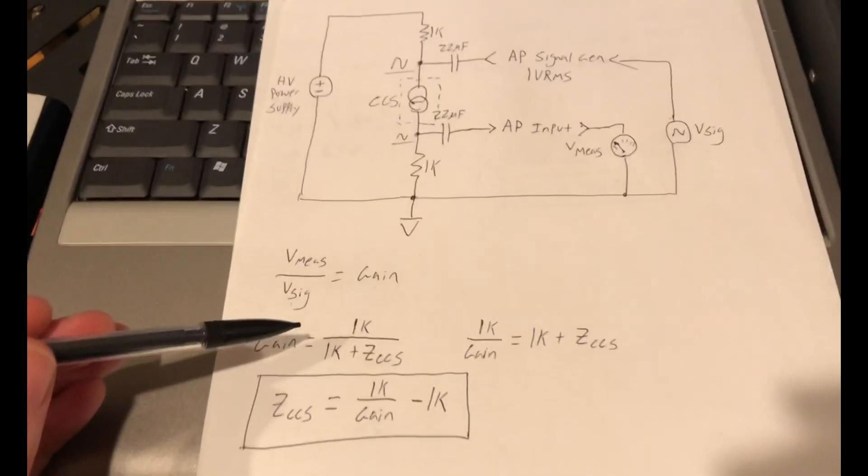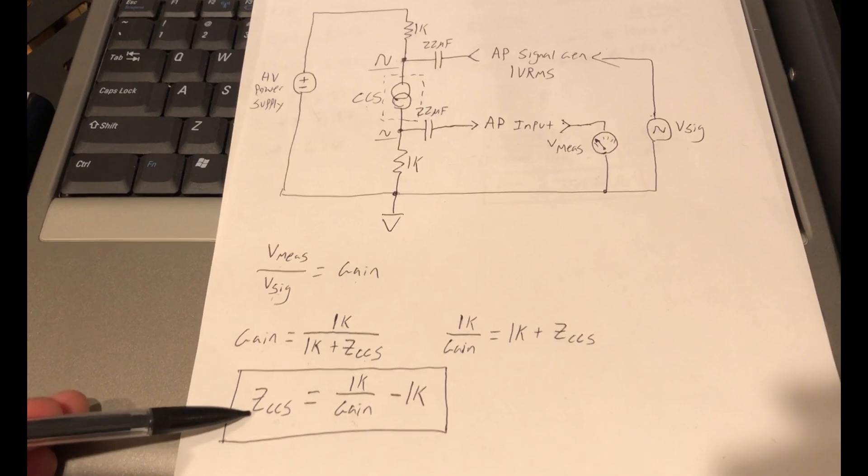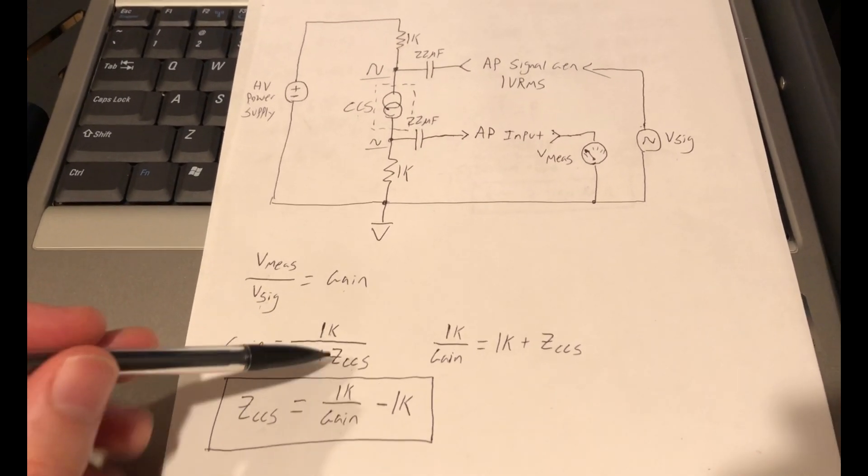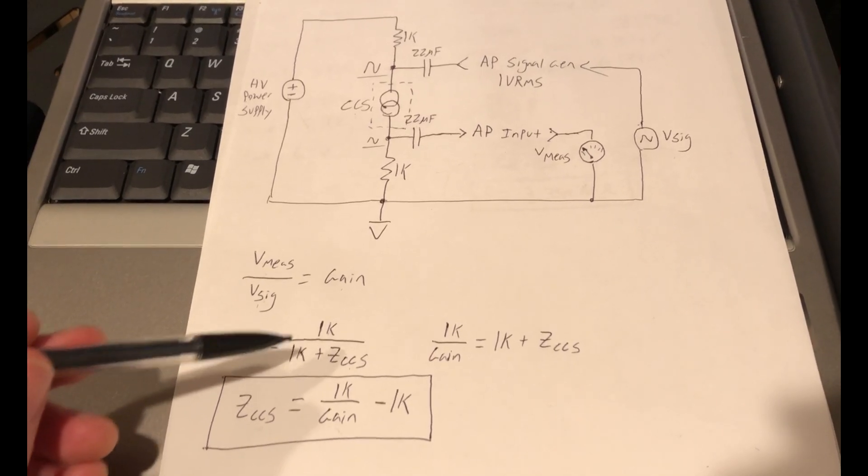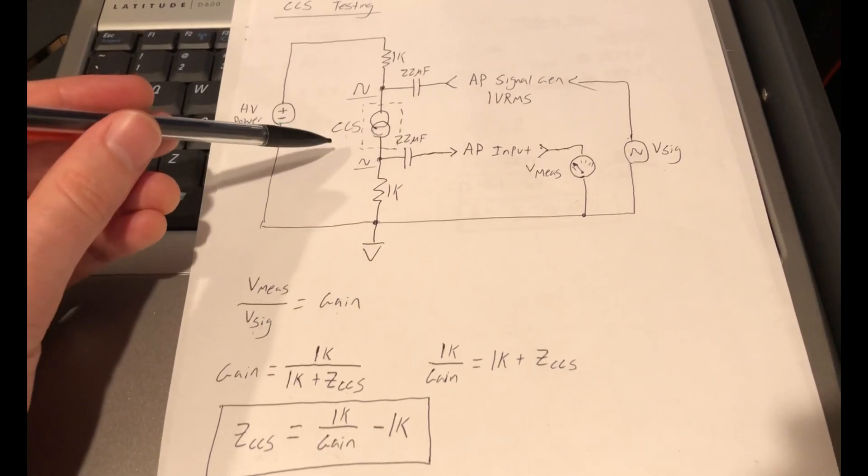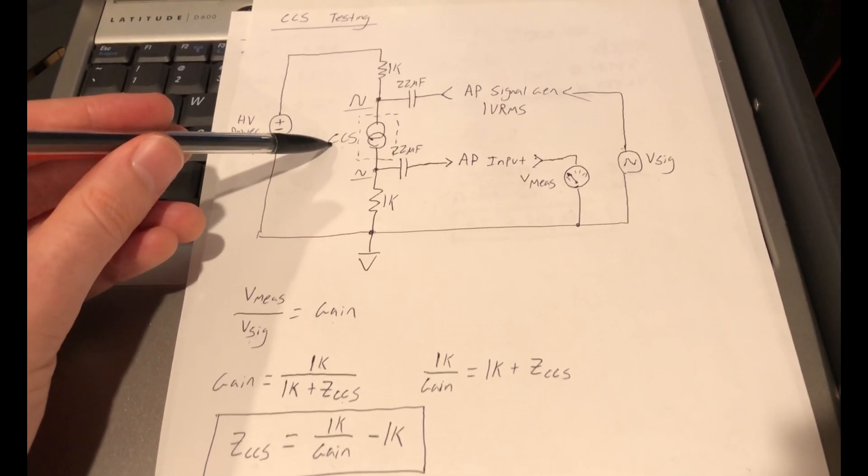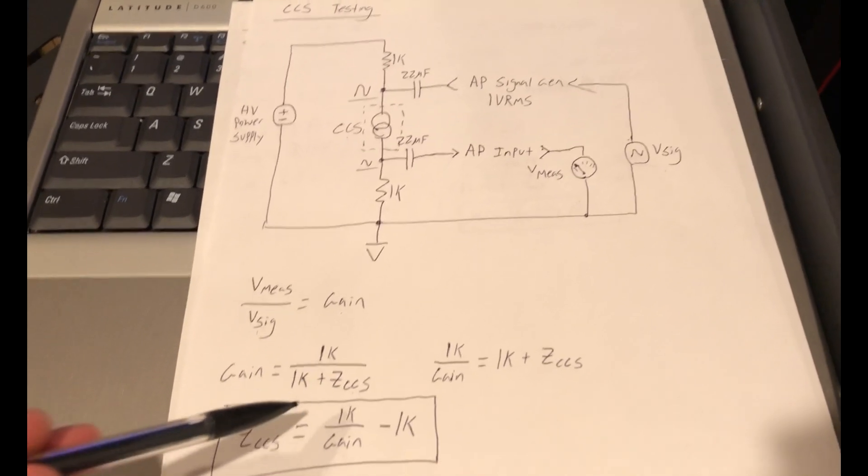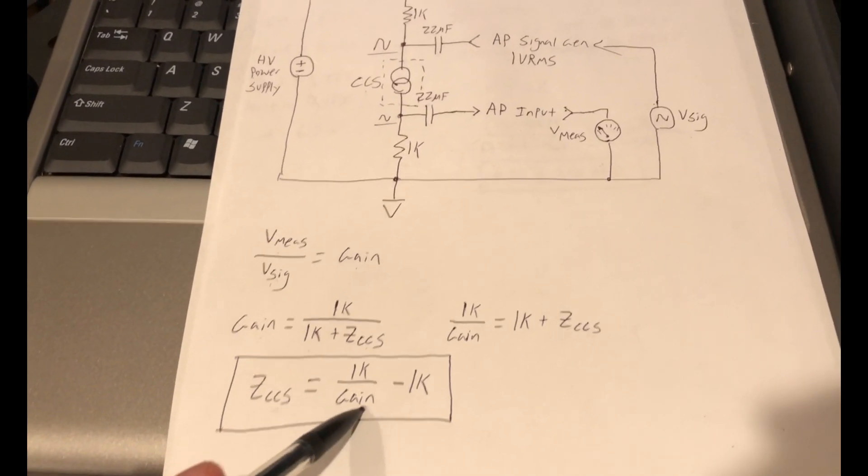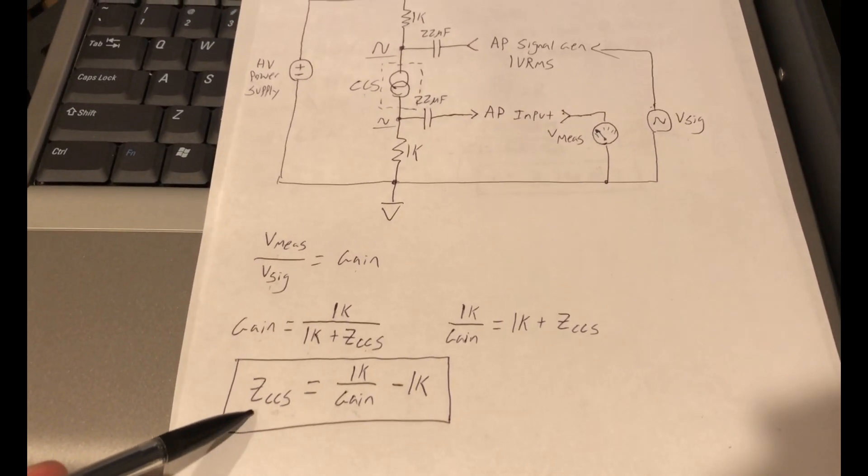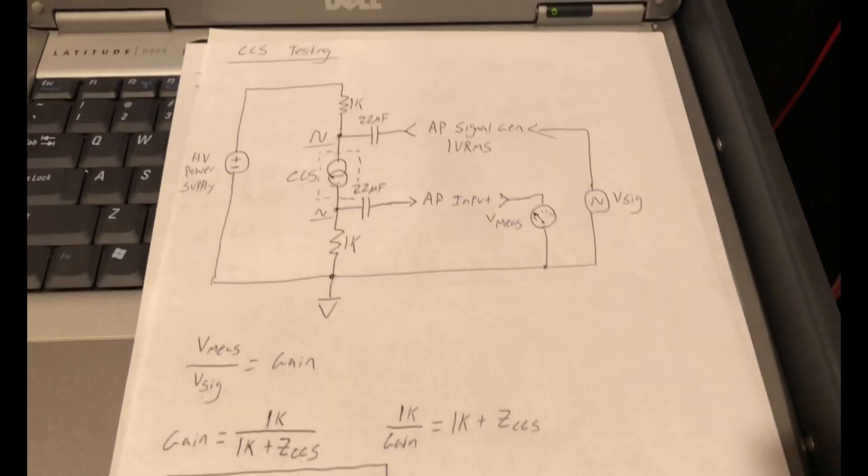These are just the simple math to figure out our impedance of our constant current source. This is the voltage divider ratio we have with the 1k lower resistor and the series combination of the unknown constant current source impedance with our fixed 1k resistor. In rearranging this equation, because we'll measure the gain with the AP, we can compute the impedance of the constant current source.